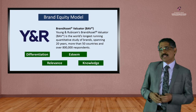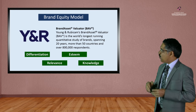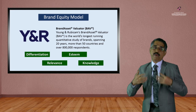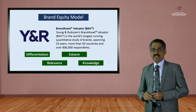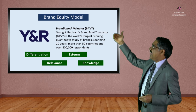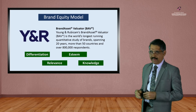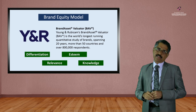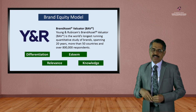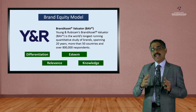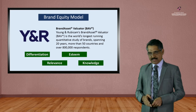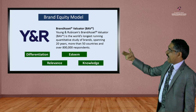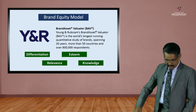Now I'm taking you to three models of brand equity. Let's look at one particular model designed by the popular ad agency known as Young and Rubicam — Y&R. In this model, brand equity is measured using four criteria: differentiation, relevance, esteem, and knowledge. Let's go one by one and see what this Y&R model talks about.